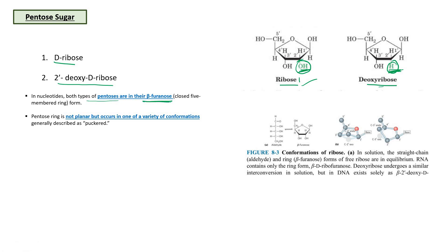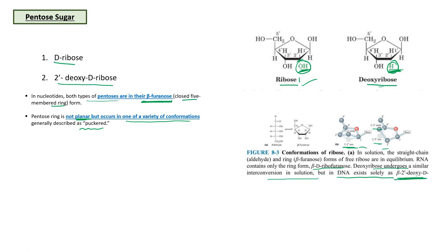Nucleotides with both types of pentose exist in the beta-furanose form — a closed five-membered ring. The pentose ring is not planar; it exists in various conformations called puckered conformations, specifically C2-prime exo, C2-prime endo, C3-prime exo, or C3-prime endo. RNA contains beta-D-ribofuranose, while DNA contains only beta-2-prime-deoxy-D-ribose.